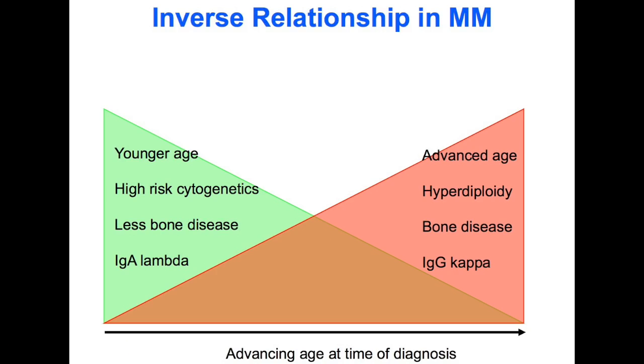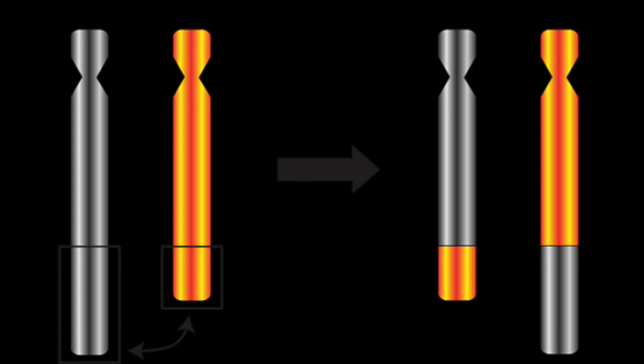The other big group of myelomas is, of course, the opposite — the non-hyperdiploid. The main characteristic of this subtype is that they have something we call chromosome translocations. Chromosome translocations are abnormal fusions of different chromosomes. Imagine a chromosome 14 and a chromosome 11 that normally live separate lives doing separate functions.